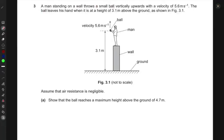A man standing on the wall throws a small ball vertically upwards with a velocity of 5.6 meters per second. The ball leaves his hand when it is at a height of 3.1 meters above the ground. Here you can see the diagram that he's standing on the wall. He throws the ball upwards in the air at this height and the ball goes up and then eventually comes back down. Assume that air resistance is negligible.